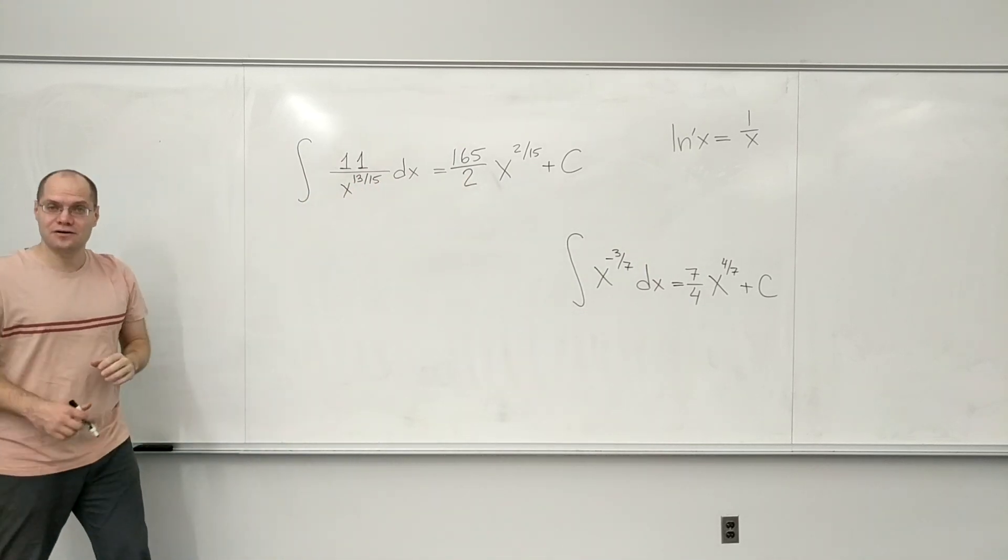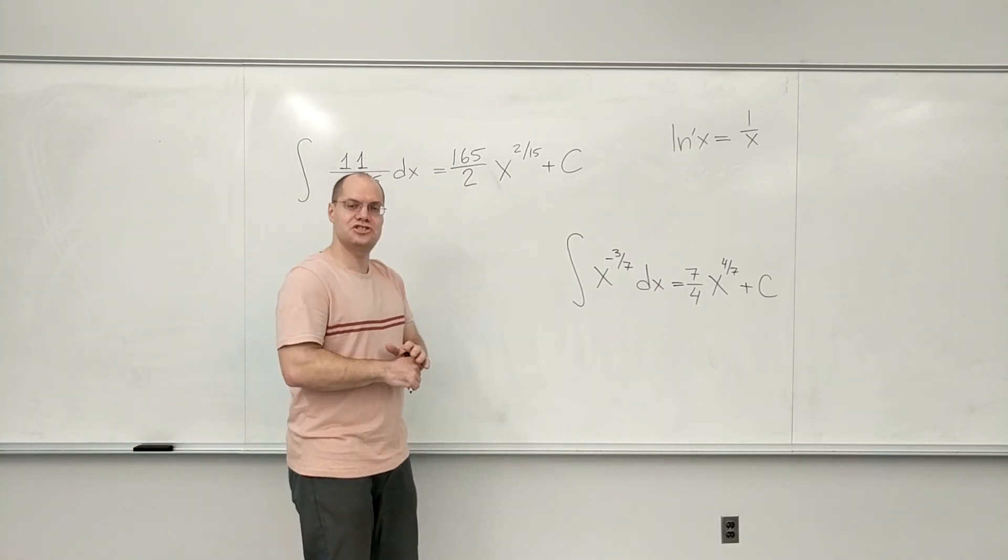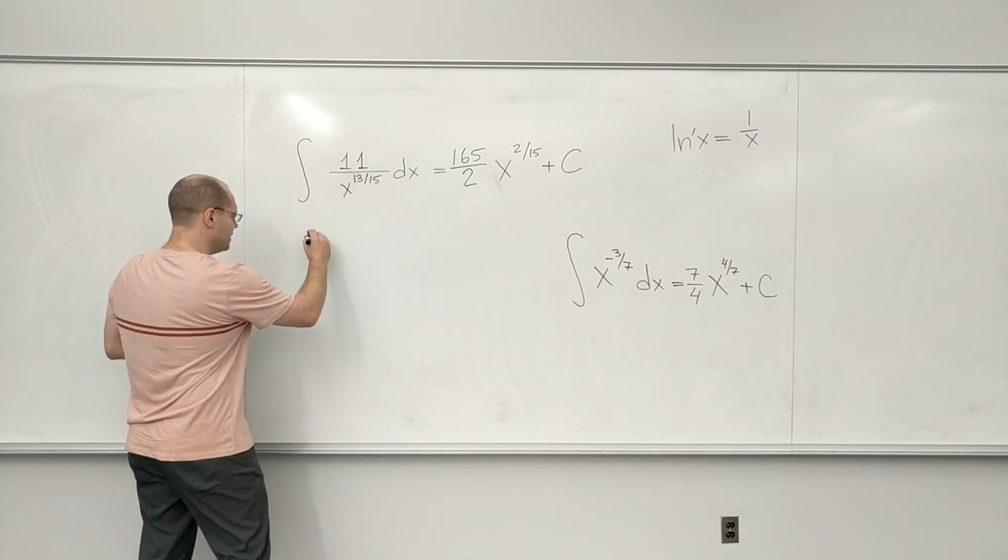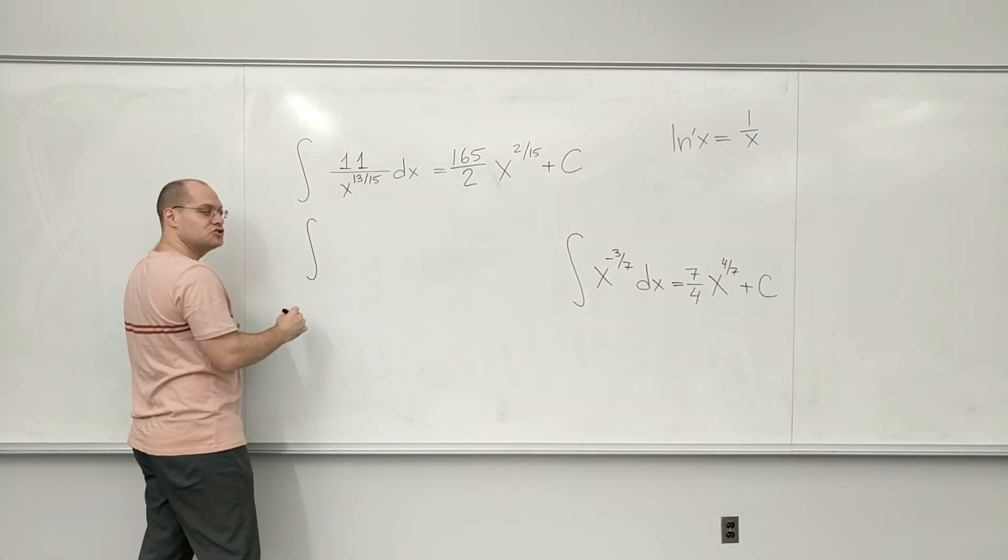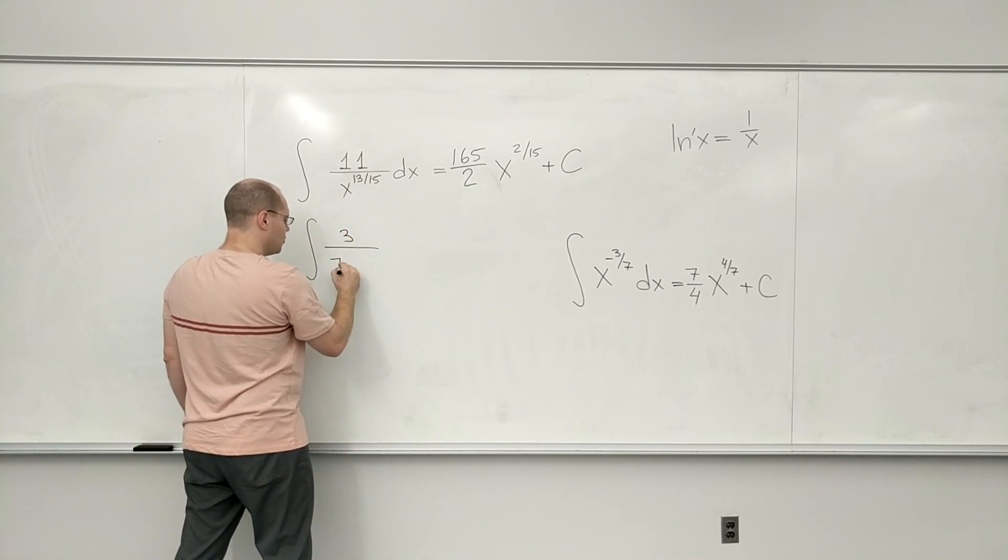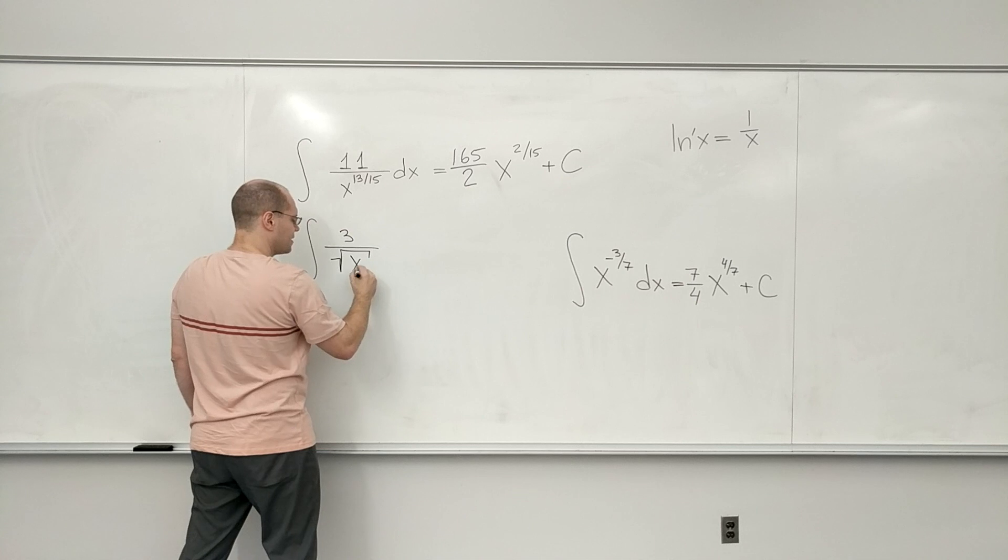There's one other power that I want to show you, which I think you want to treat differently from all others. It's a very common occurrence that you will get a square root on the bottom. So 3 over square root of x dx.